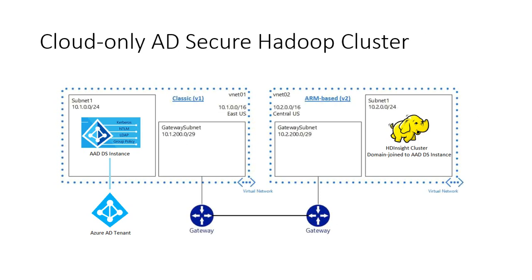Earlier we managed three scenarios, and this is scenario number one: cloud-only AD secure Hadoop cluster. In this scenario you can see we need a subnet, classic version vNet, and ARM template with an HDInsight cluster for domain join. I need a gateway and I need my tenancy. The security side of that will all fall under the same vNet. Let's deep dive into this.